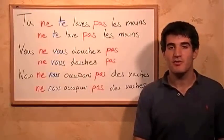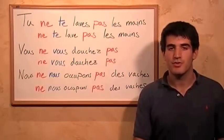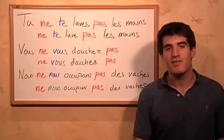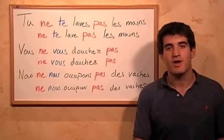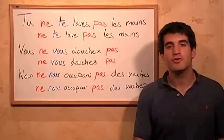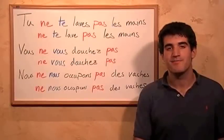As a note, with s'occuper, you always have to have de between s'occuper and the thing that you're taking care of. So it's s'occuper des vaches, which is why in this sentence it becomes ne nous occupons pas des vaches — let's not take care of the cows. C'est tout.